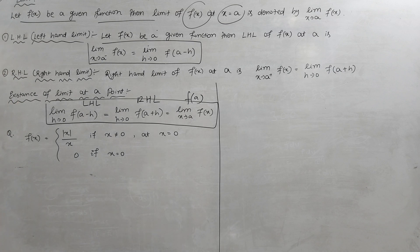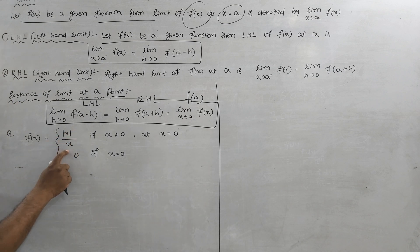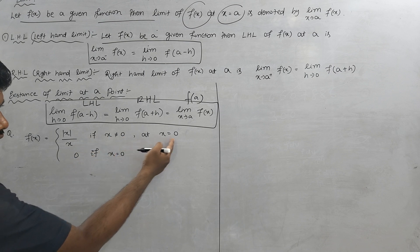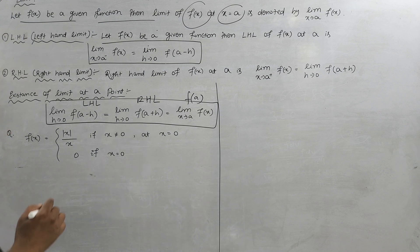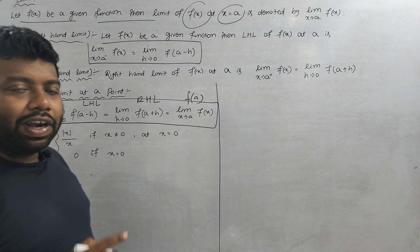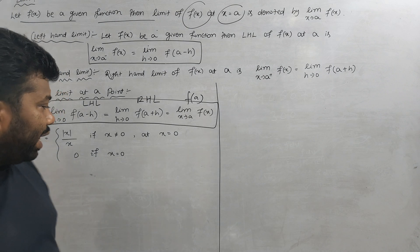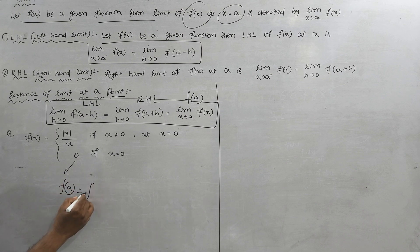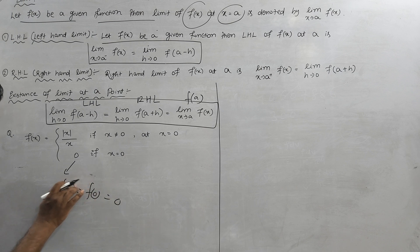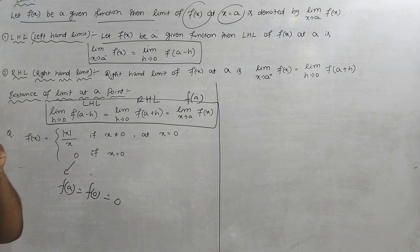Let us see an example. Here we see a question: f of x equals mod x divided by x, if x is not equal to 0. At x equal to 0, if x equals 0. So we can find LHL and RHL to find the limit. And f of a — that is f of 0 — so f of 0 will be 0.